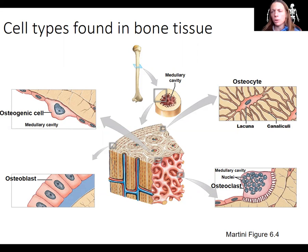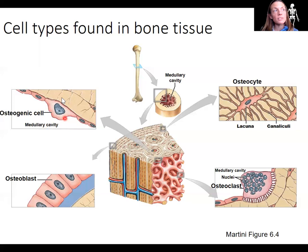Cell specialization occurs early in development — cells specialize or differentiate and develop into different tissues of the body. This is review from week two, where we talked about cell differentiation. As cells specialize, they mature and lose their ability to divide. But in most tissues, there are still some less specialized cells present that retain the ability to divide. These are multipotent stem cells that are still hanging around, able to divide.